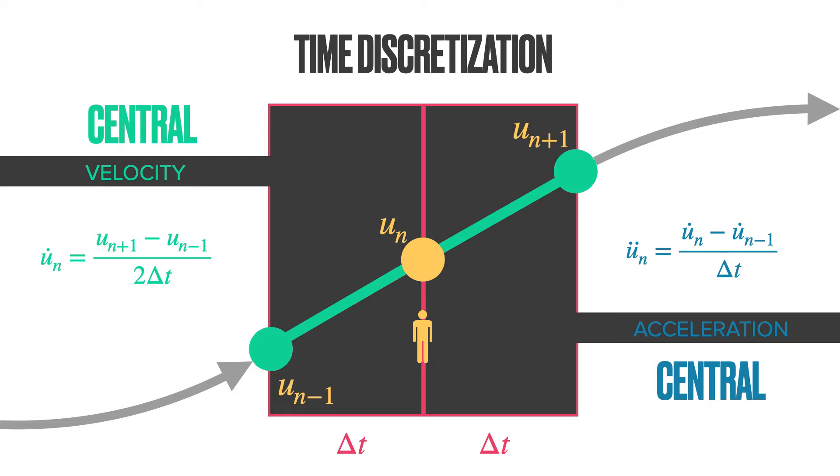The velocity at N can be computed using the difference in the displacement across two time steps. In a similar manner, we can also compute the acceleration as the difference in the velocity. Introducing the forward Euler approximations for the velocity, we can obtain the acceleration as a function of the displacements. Please take a few minutes to derive this formula yourself.